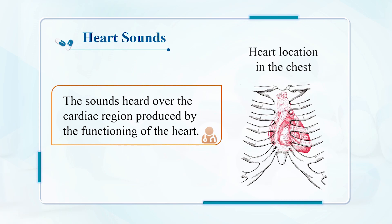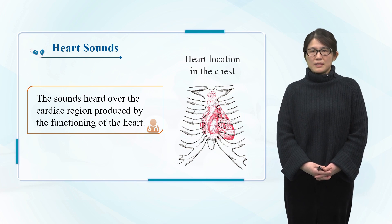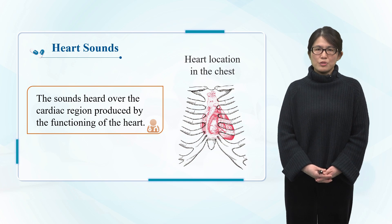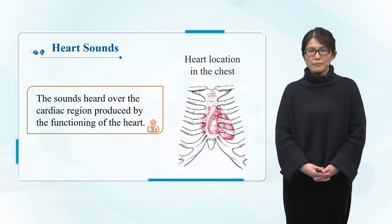During the cardiac cycle, turbulence caused by myocardial contraction, valve opening and closing, blood flow rate changes, and vibration caused by blood flow hitting the ventricular walls and aortic walls can be transmitted to the chest wall through surrounding tissues and heard in certain parts of the chest with a stethoscope. The corresponding sound is the heart sound. Heart sounds occur in specific periods of the cardiac cycle, and their tone and duration have certain characteristics. A normal person can produce four heart sounds per heartbeat, but usually only the first and second heart sounds can be heard by auscultation.